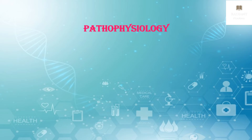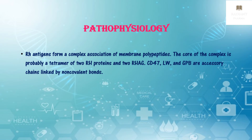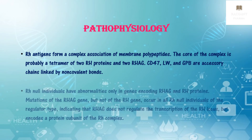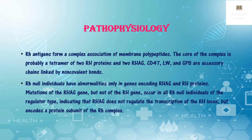Now let us discuss the pathophysiology of RH deficiency syndrome. RH antigens form a complex association of membrane polypeptides. The core of this complex is probably a tetramer of two RH proteins and two RH associated glycoproteins. CD47, LW (lightweight glycoprotein), and GPB (glycophorin B) are accessory chains linked by non-covalent bonds. RH null individuals have abnormalities only in the genes encoding RHAG and RH proteins; CD47, LW, and GPB remain unaltered.